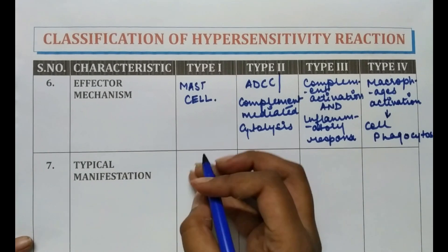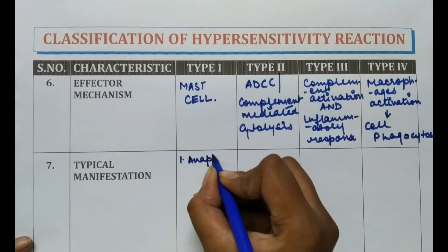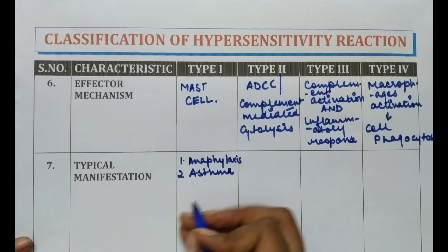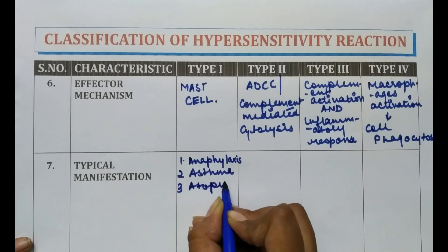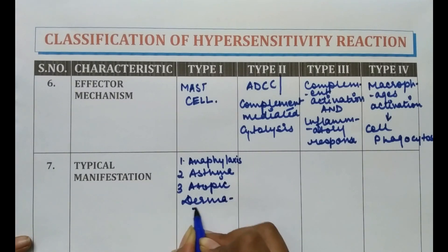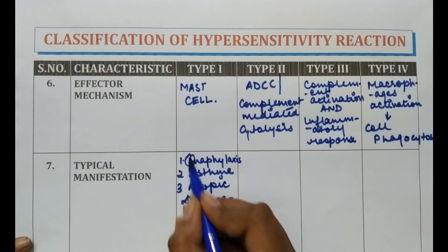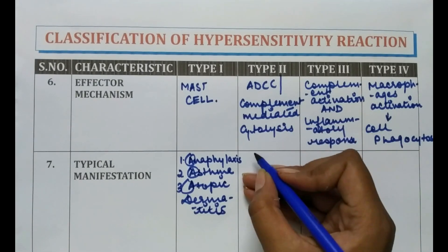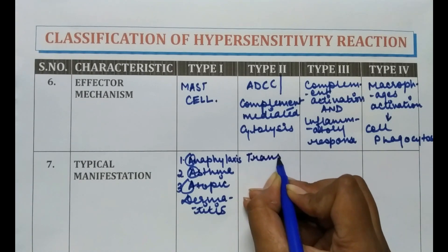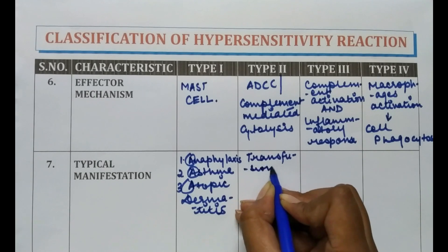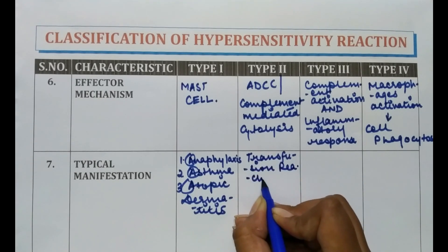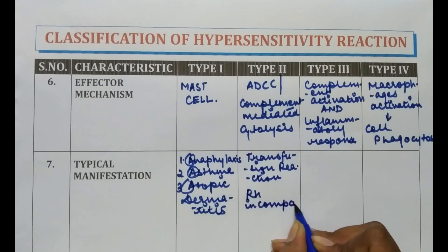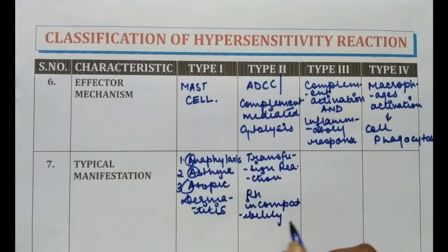Typical manifestations: Type 1 includes anaphylaxis, asthma, and atopic dermatitis — all starting with A, A, A, which is the mnemonic for Type A reaction. Type 2 manifestations include transfusion reaction, Rh incompatibility, and hemolytic anemia.